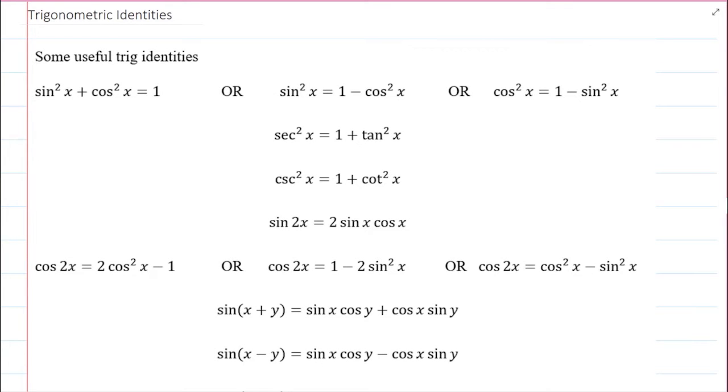Here are some useful trigonometric identities. This first one is the result of Pythagorean Theorem on the unit circle: sine squared plus cosine squared equals 1. We can rearrange it and solve for sine squared, that will be 1 minus cosine squared, or we can solve for cosine squared, that will be 1 minus sine squared. These are essentially the same identities.